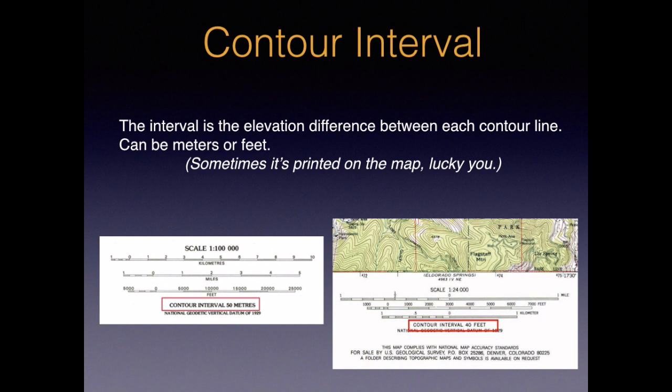The second of our three terms is a contour interval. An interval is the elevation difference between each contour line. In our example with the island, the interval was 10 feet. Intervals can be in meters or feet and can be different on every map. On the left is a small-scale map from Canada with an interval of 50 meters. On the right is a 7.5-minute map from the U.S. Geological Survey, here with an interval of 40 feet.